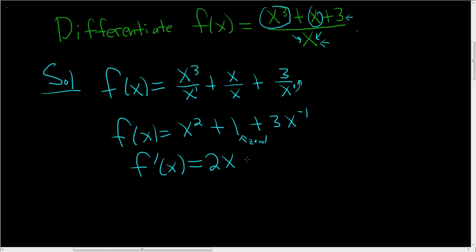Here, we bring the negative 1 out front, so we end up with negative 3x to the negative 2, because negative 1 minus 1 is negative 2, and there is the answer.